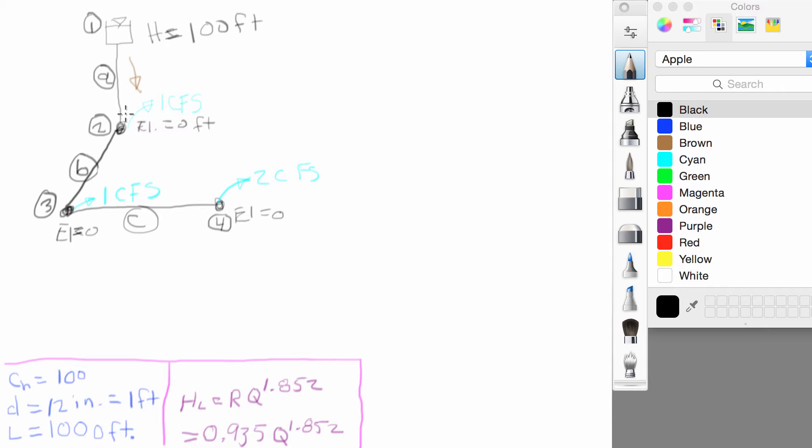In the previous video we drew this network with a reservoir at the top with a hydraulic head of 100 feet and then three junctions each at elevation zero and three pipes, pipe A, B, and C, each having a Hayes and Williams roughness of 100, diameter of one foot, length of 1,000 feet.